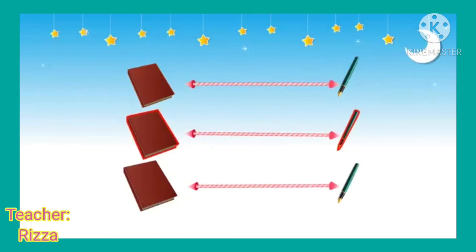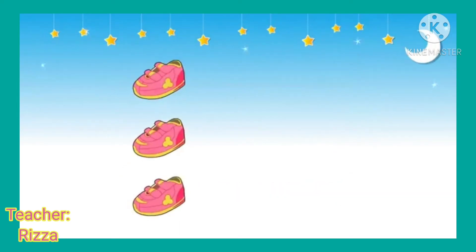This means one-to-one correspondence between the books and the pencils. When each member of one group is matched with a member of another group, it is called one-to-one correspondence. Similarly, here shoes are paired with the socks.